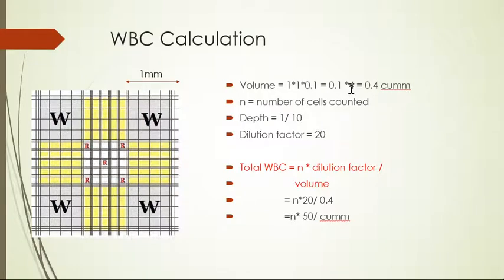N is number of cells, and dilution factor here is 20. Total WBC is n x dilution factor divided by volume, so n x 20 divided by 0.4, which equals n x 50. The WBC count is whatever n value we count multiplied by 50.